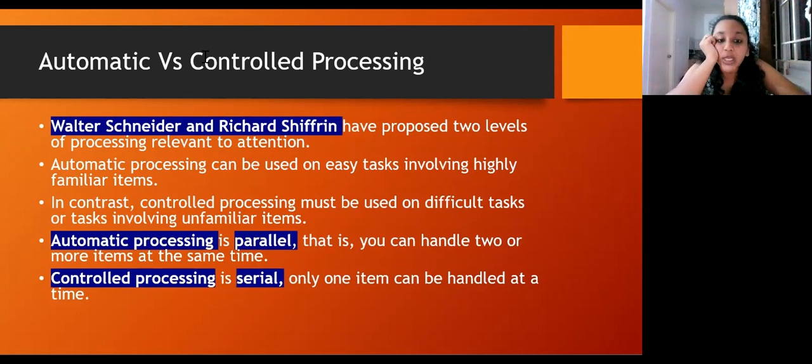In contrast, controlled processing must be used on difficult tasks or tasks involving unfamiliar items. If I tell you to cook something, like sambar, and you've never done this before, cooking would be an automatic process for you, but cooking sambar, which is different, will be very difficult for you and will need more controlled processing. You have to think about it, you have to go slow.